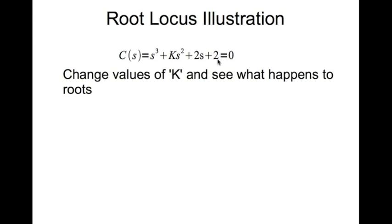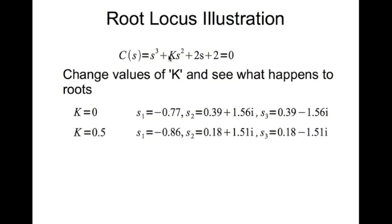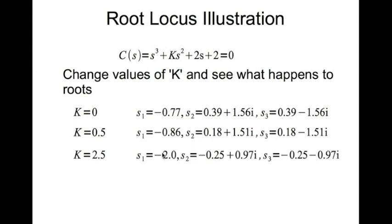Now we can see what happens if we put in different values of K. At K=0, solving the cubic equation gives three roots: a real root in the left half plane and a complex pair in the right half plane — so at K=0 the closed-loop system is unstable. Increasing K to K=0.5 gives three different roots. Again we get a real root in the left half plane and a complex pair in the right half plane, so the system is still unstable.